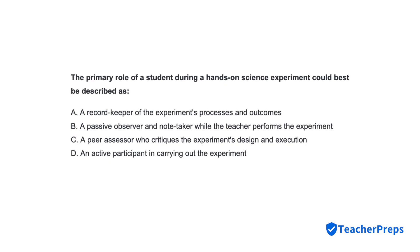The primary role of a student during a hands-on science experiment could best be described as? Correct response is letter D, active participant in carrying out the experiment.